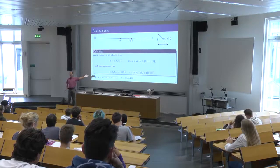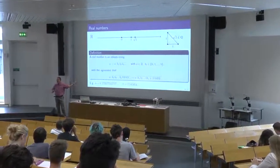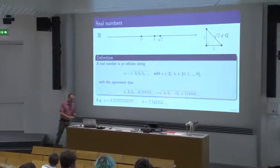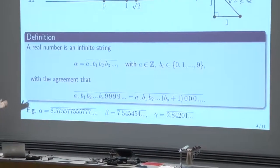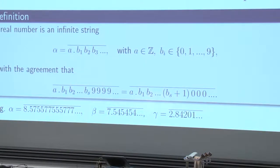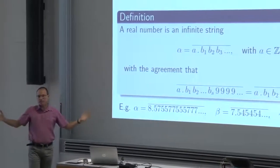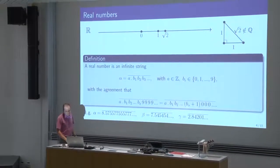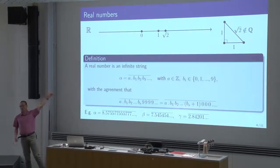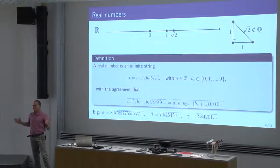Or take the decimal 0.5454545454... — now it repeats itself, it's periodic, so it is a rational number. Or most interestingly, you can write pretty random digits — 2.84201... — producing one random digit every day, and you are in the process of producing a real number. That's what real numbers are. We'll think about them as infinite decimals, infinite strings.